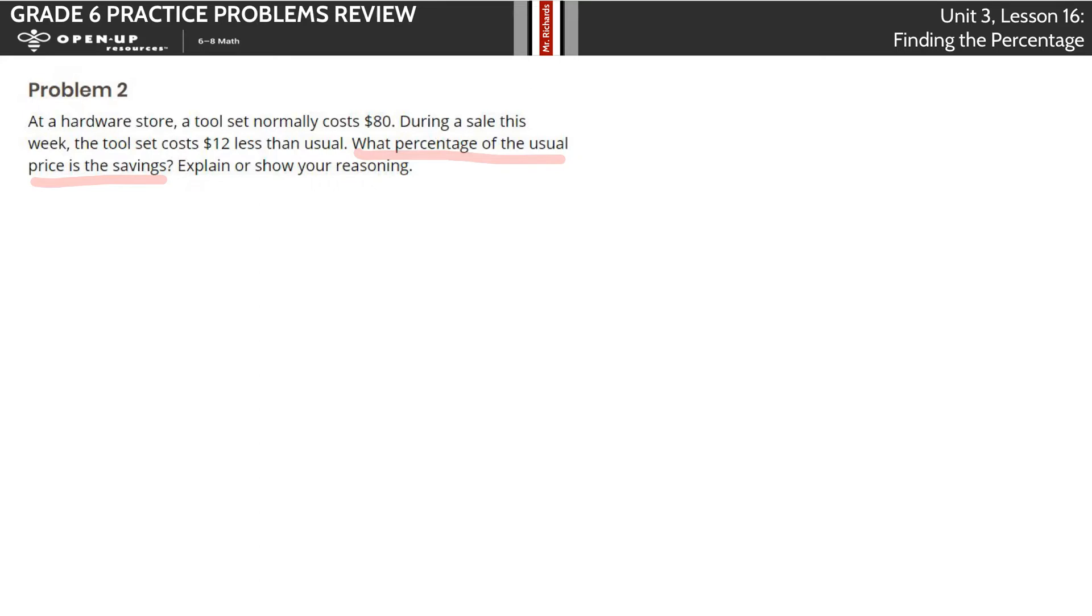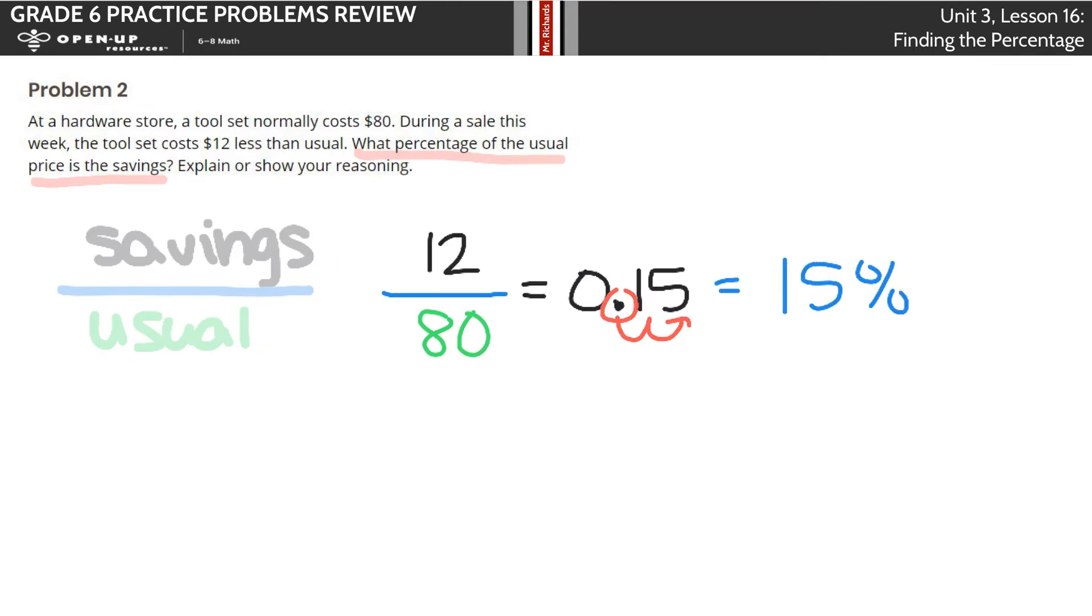We need to look at our savings over the usual. How much do we save? The tool set costs $12 less than usual, so we're saving $12. We can divide that by the usual amount, which normally costs $80. When we take 12 divided by 80, we get the decimal 0.15. Move your decimal point over from a decimal to a percent, two spots to the right. And our solution here is 15%.